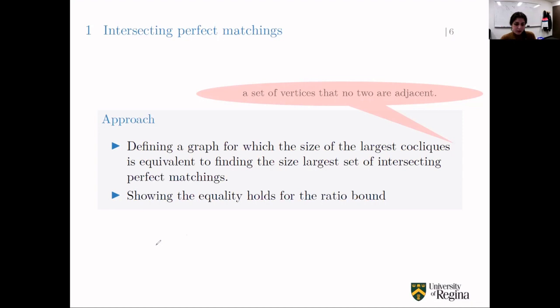The ratio bound is a bound on the size of the largest coclique. If we denote the size of the largest coclique by alpha, then alpha is bounded by the number of vertices divided by (1 - k/tau), where this holds for a regular graph with degree k (the greatest eigenvalue) and tau the least eigenvalue. For that special graph, they found the largest and least eigenvalue and showed that equality holds in the ratio bound. The canonical intersecting perfect matchings were the coclique achieving this bound, proving they are the largest set of intersecting perfect matchings.